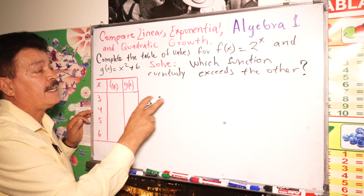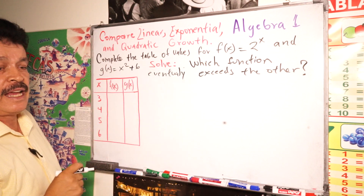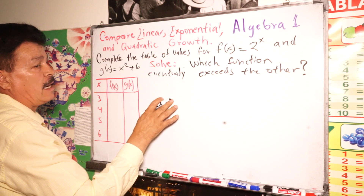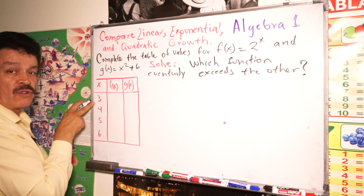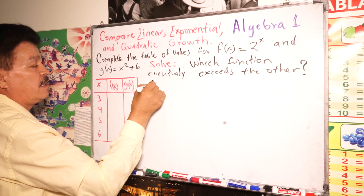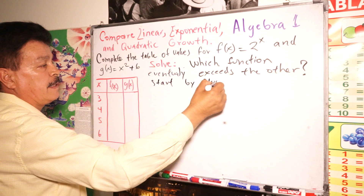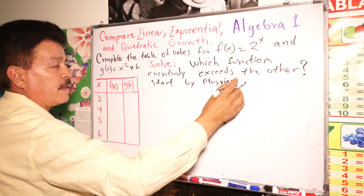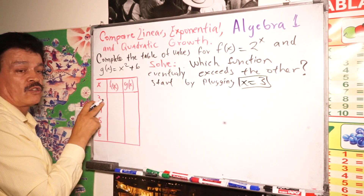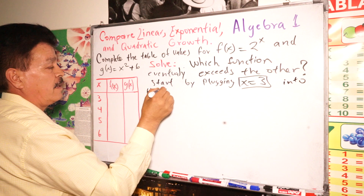We have to complete the table by plugging in the x values into f(x) or g(x). The x values we have are x equals 3, 4, 5, and 6. Let's start by plugging x equals 3 into f(x) and then g(x).